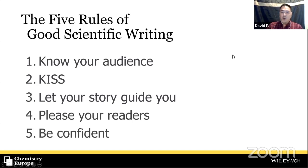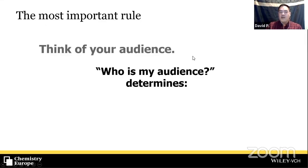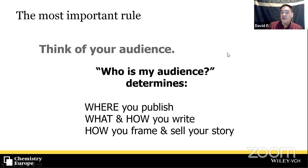The first rule is to know your audience. A lot of communicators in any field — not just in science — will say that this is the prime rule in communication: to think of your audience and to know your audience. When you think of your audience, you're asking yourself: who is my audience? Who am I talking to? Who is going to read this piece of work?